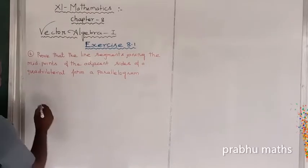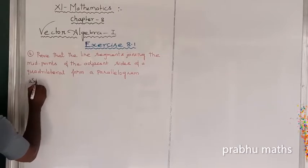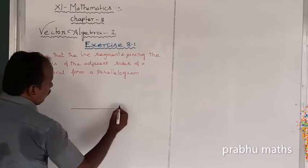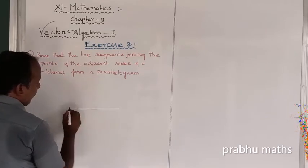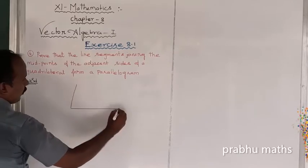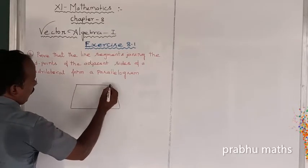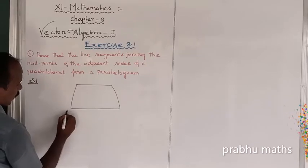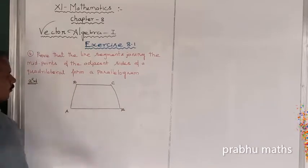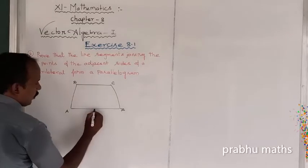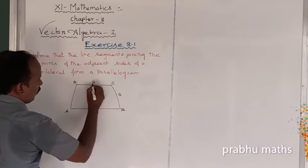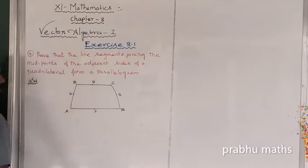First of all, draw the quadrilateral. Label the vertices A, B, C, D and the midpoints P, Q, R, S.